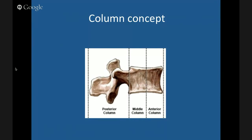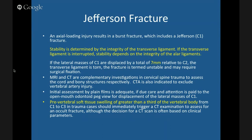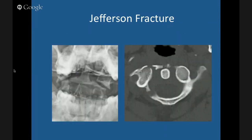Jefferson fracture is a fracture of the arch of C1 from an axial loading injury. On the open mouth view, look at the arch of C1 — make sure it's well aligned on each side. Take the distance of lateral mass overhang on the right plus the left side — if the total is more than 7 millimeters, it implies the transverse ligament is torn and it's an unstable fracture. Not all Jefferson fractures are unstable — but when the transverse ligament is torn, it is. On CT, if the fracture extends into the foramen transversarium, you need a CT angiogram to check the vertebral arteries.